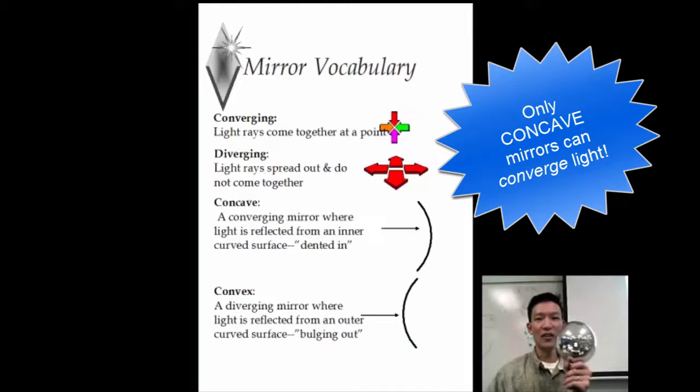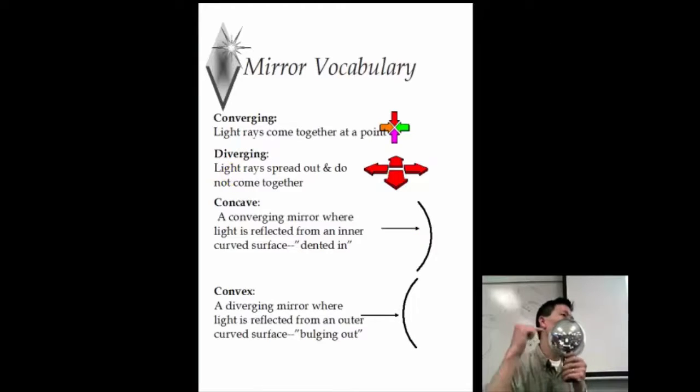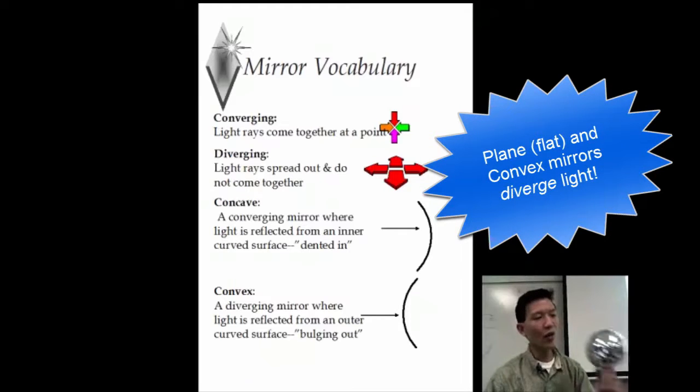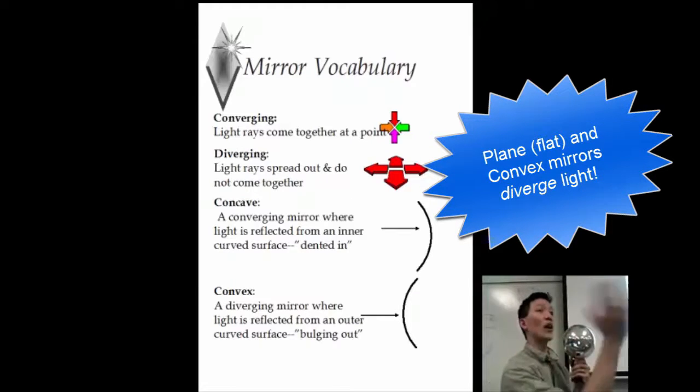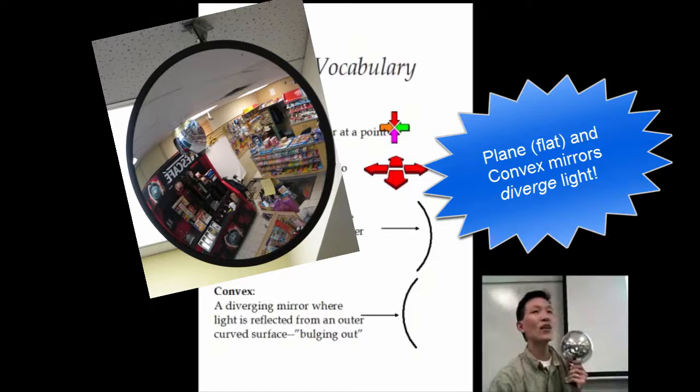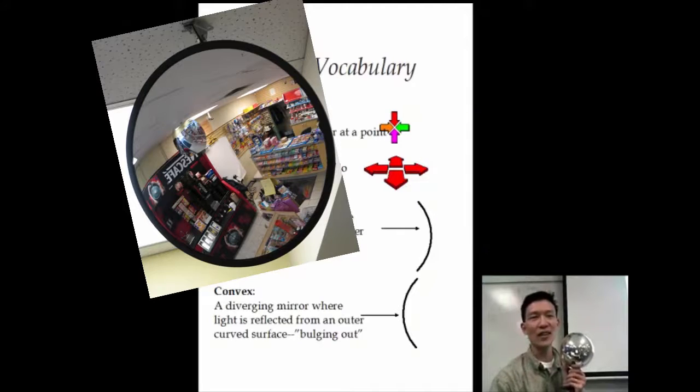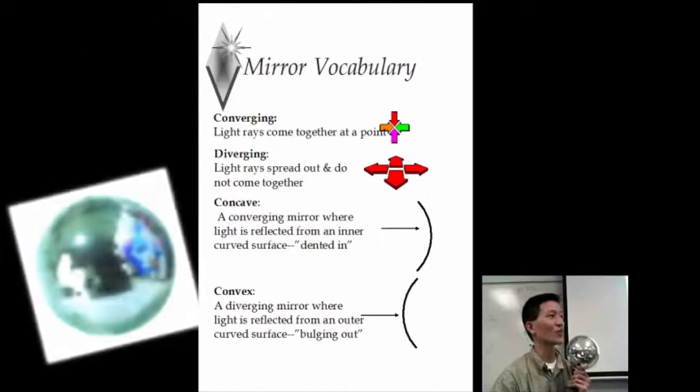The technical term for spreading light out is called diverging, and a flat mirror spreads light out, but the one that does it effectively is one that's bulging out. That's called convex. Why would you ever want to do that? Well, you can spread light out to give you a wider field of view. It's usually what we try to do, or you could do it for artistic effects, like disco balls, Christmas ornaments, etc.